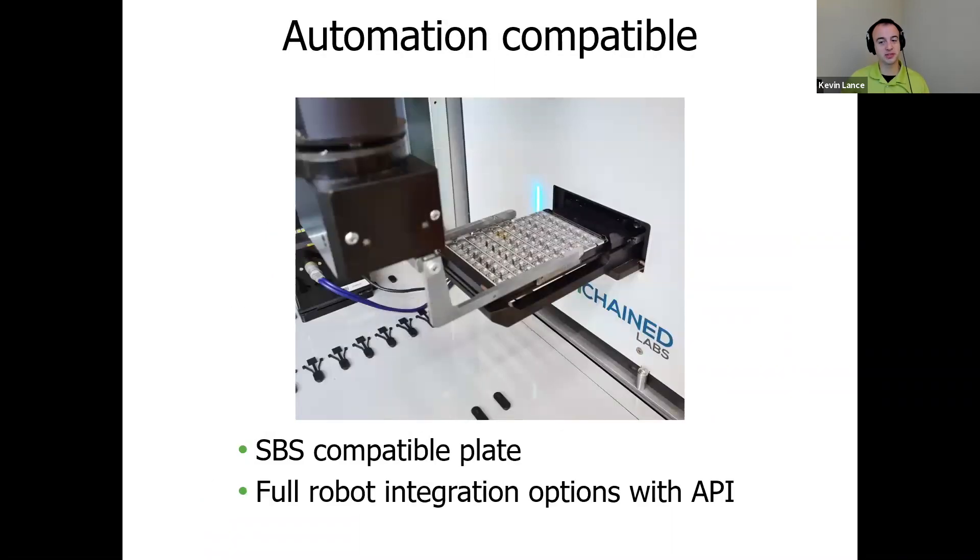In addition to the capabilities we've discussed so far, Stunner also meets the needs of labs working in larger scales. So for these super high-throughput needs, the plates used for Stunner are compatible with liquid handling robots, and the system can be fully integrated with our API setup, so the robot does all the work for you, from loading the sample in the plate, setting up the experiment, loading the plate in the system, all the way to exporting the results into your LIMS. On top of that, you can use plate tracking with barcodes to ensure traceability.